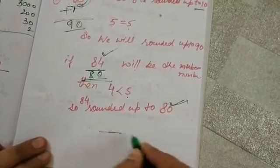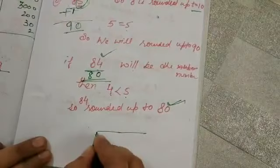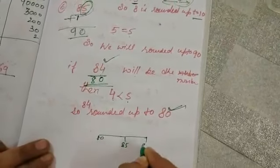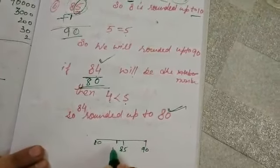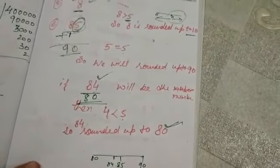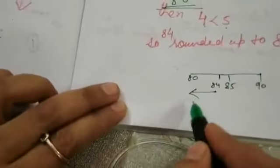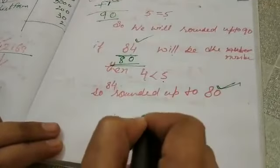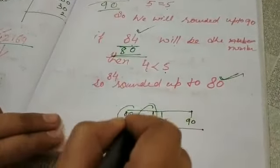Because if you see the numbers, it's 80, 85, and 90. Here is 84. From 84 we have to go to 80. It's an easier way rather than going to 90. So we will write 84 as 80. Clear to all of you?